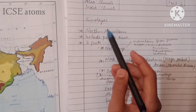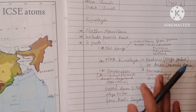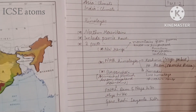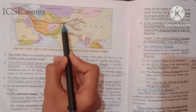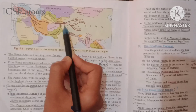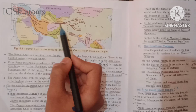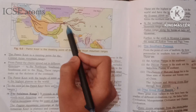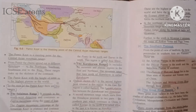The Himalayas are known as the northern mountains because they are present on the north side of the Indian subcontinent. The Himalayas include the Pamir Knot. The Pamir Knot is at the topmost northern side of India, and from it various mountain ranges arise — such as the Tian Shan, Kunlun, and Karakoram. So the Pamir Knot also comes under the category of northern mountains.